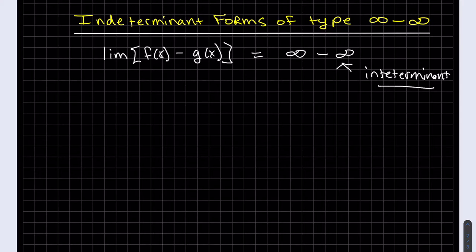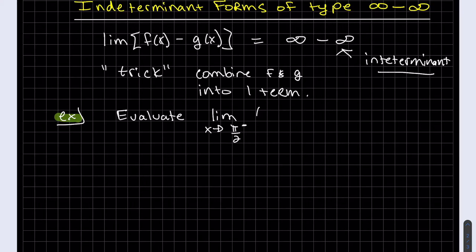So what can you do? If you have this scenario, our trick is to combine f and g into one term. Let's look at an example. When you plug in pi over 2 into tangent of x, sine over cosine, cosine of pi over 2 is 0 on the bottom. That's infinity. And 1 over cosine, it's the same thing. Cosine of pi over 2 is 0. So our trick would be to combine these two into one term.